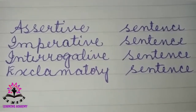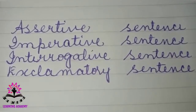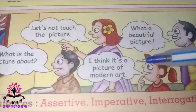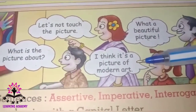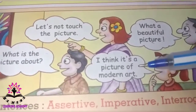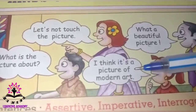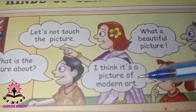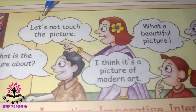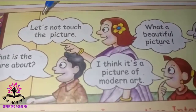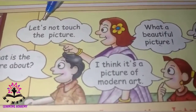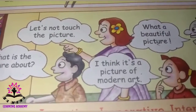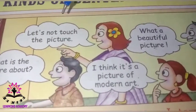One is assertive sentence, second one imperative sentence, third one interrogative sentence, and fourth one exclamatory sentence. The first kind of sentence is assertive sentence. Assertive sentence gives us some information and it always ends with a full stop.